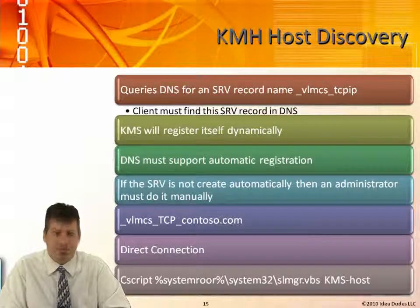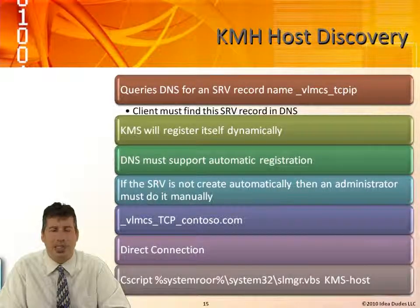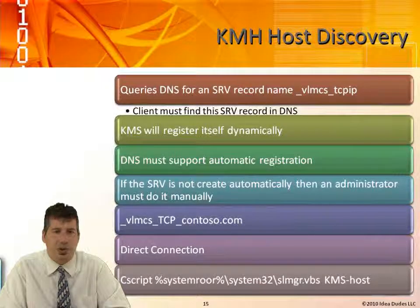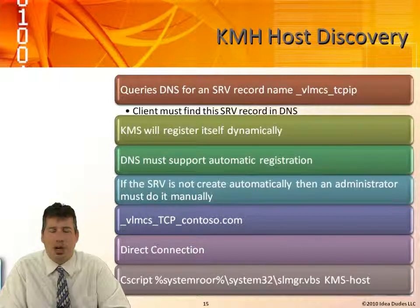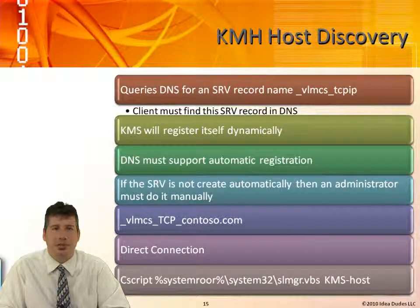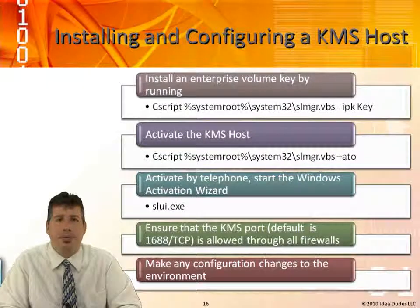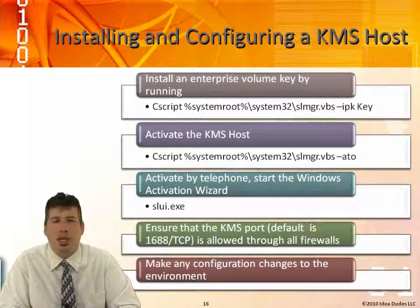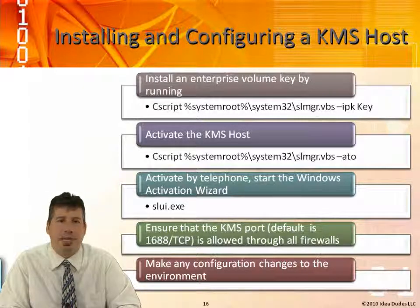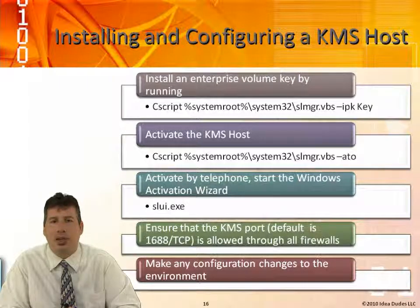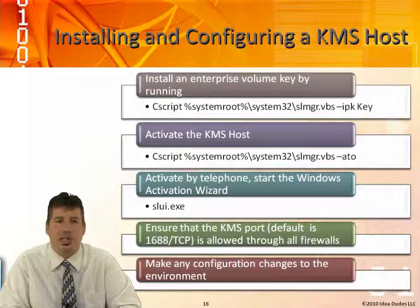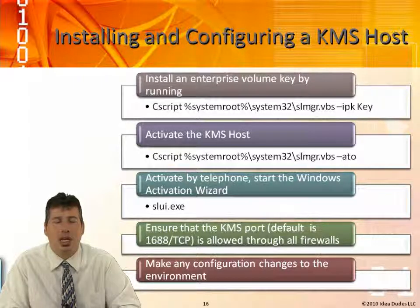You can also activate the KMS through the command prompt using: cscript %SystemRoot%\system32\slmgr.vbs with the KMS host switch. To install and configure a KMS host, you install an enterprise volume key by running slmgr.vbs -ipk followed by the key, then activate the KMS host with slmgr.vbs -ato. To activate by telephone, start the Windows Activation Wizard using slui.exe. You also need to ensure that port 1688 is allowed through the firewall and make any necessary configuration changes.